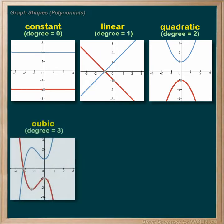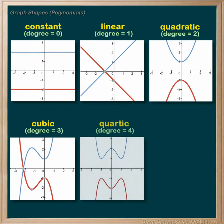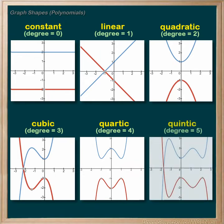A cubic is a polynomial with a degree of three and is generally shaped like this — positive in blue and negative, or the reflection, in red. A quartic has a degree of four, and its positive is just a big W and the negative would be a big M. A quintic has a degree of five and is generally shaped like this — positive in blue and negative, or the vertical reflection, in red.